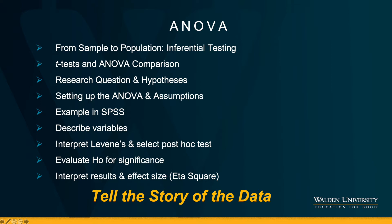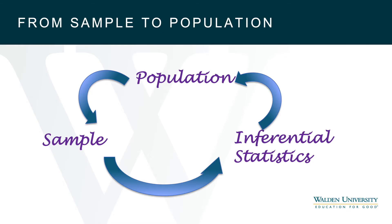We will complete the conversation by telling the story of the data, including the social change interpretation. Now let's get started. Here is our sample to population figure again. You can see that we are now really engaged in inferential statistics — that's where the ANOVA lives, in the same place where the t-test lived last week.